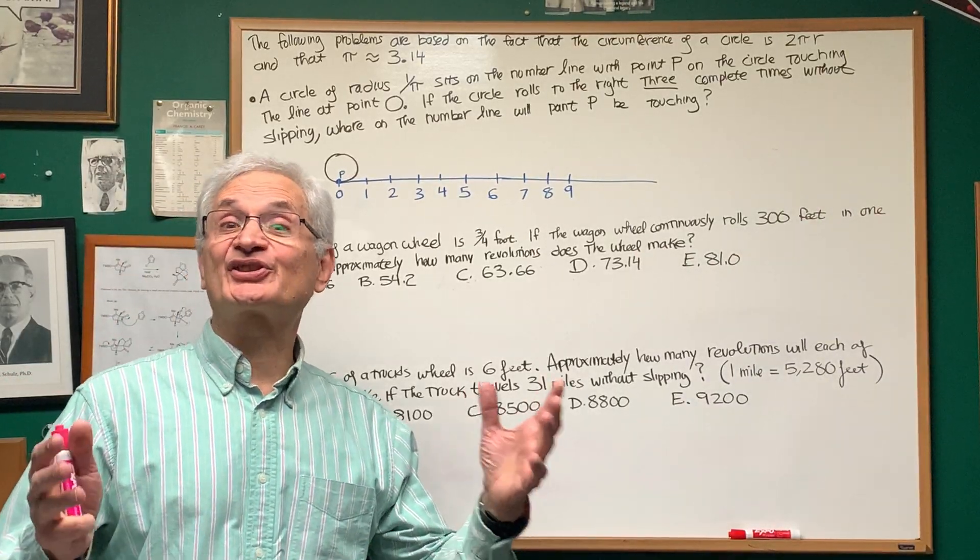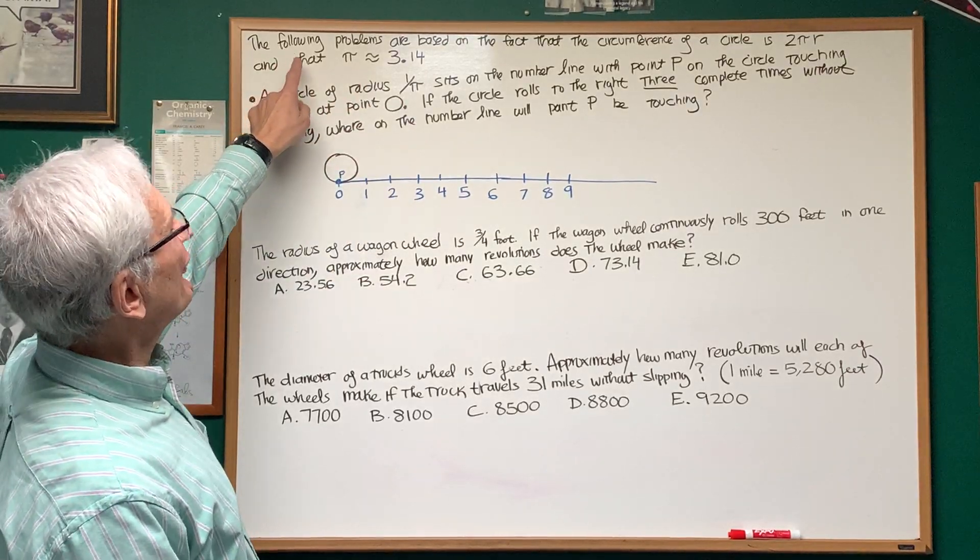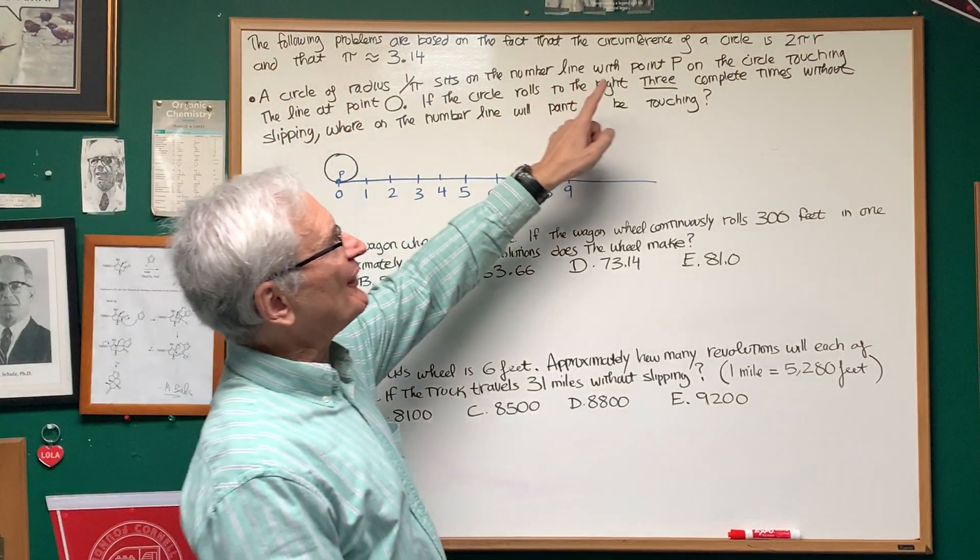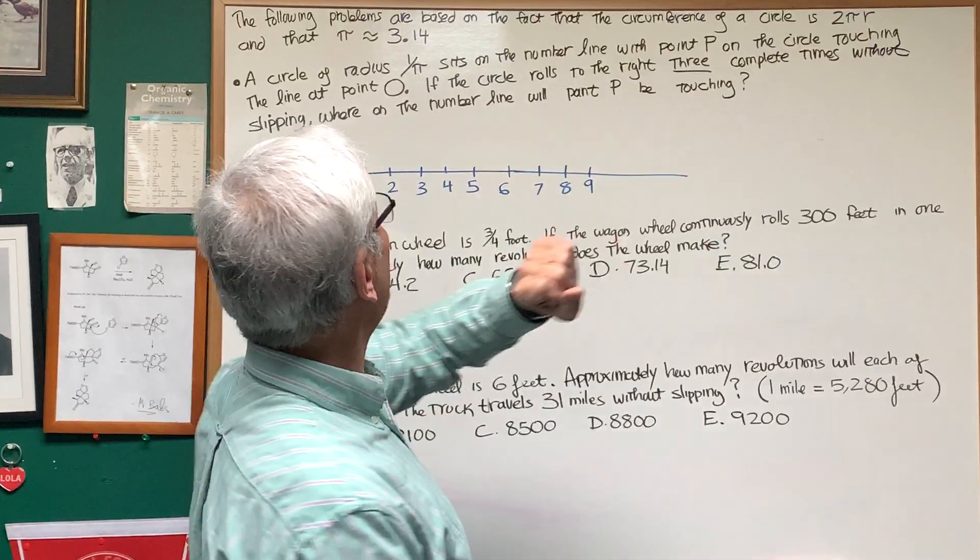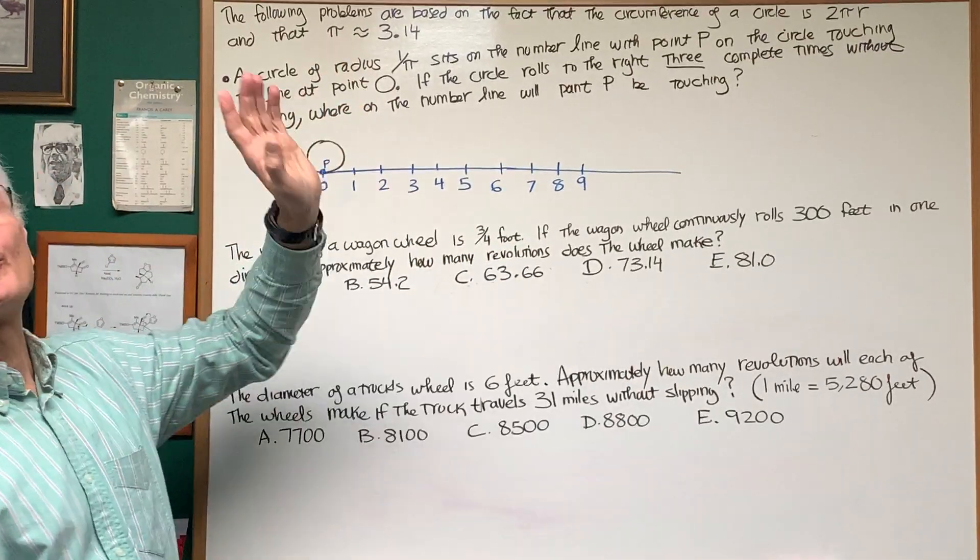Okay, today's problems deal with circles and circumferences. And here's a little preamble to these three problems. The following problems are based on the fact that the circumference of a circle is 2πr, and that the value of π is approximately 3.14.